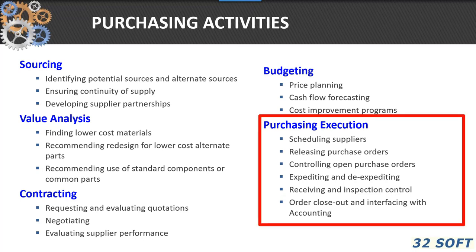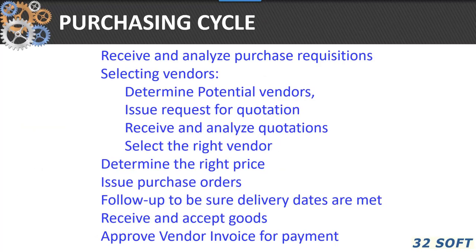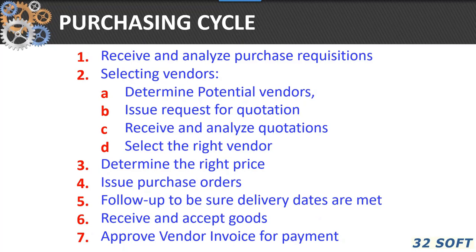We're going to spend most of our time talking about the execution process. From a previous webinar, I mentioned the two terms nomothetic and idiomatic. Nomothetic is a general, conceptual sort of thing; idiomatic is at the detail level, the part number level. We do the purchasing cycle based on a nomothetic idea of how we process things, but we actually do it on individual part numbers and individual POs. That starts with receiving the requisition from the user, selecting vendors, looking for quotes, selecting the right vendor, determining the price, issuing a purchase order, following up to ensure dates are met, receiving the product into inventory, and then approving the vendor for payment.